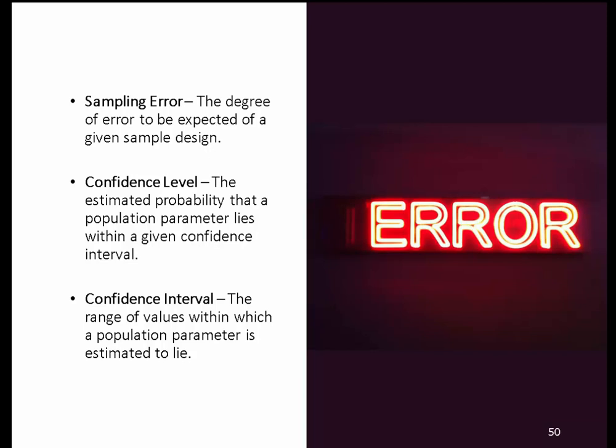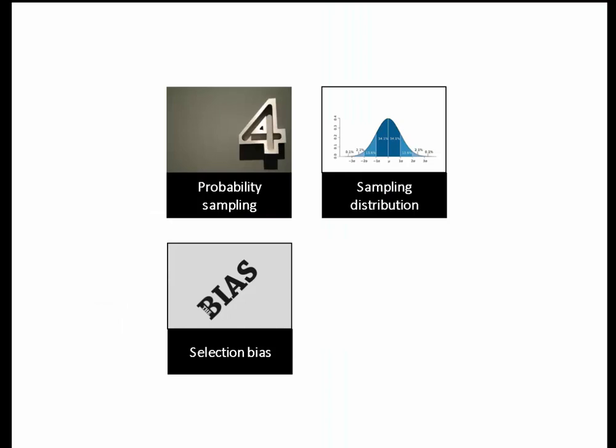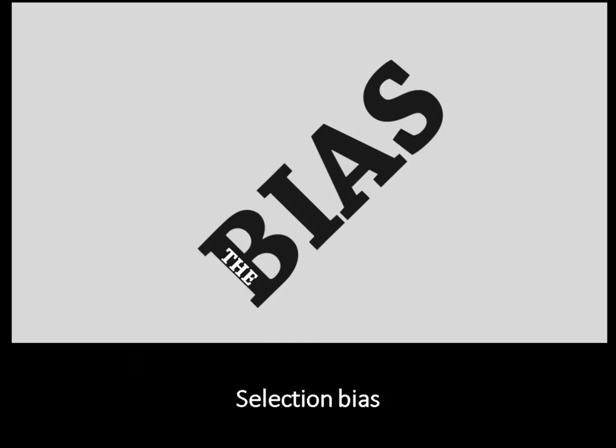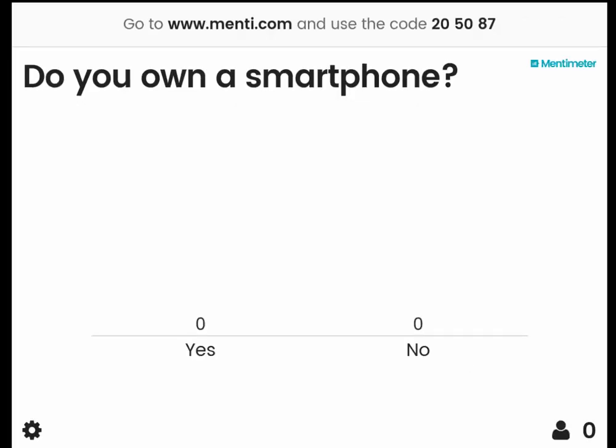Then there's the confidence interval — basically your confidence for the results to be within a certain range, with a certain probability. I want to move on to talk briefly about selection bias, and I have a little quiz here for you.